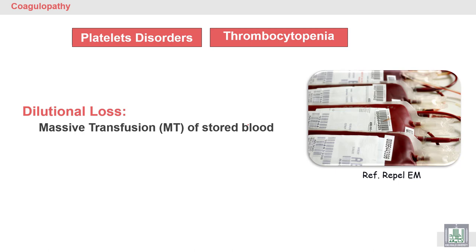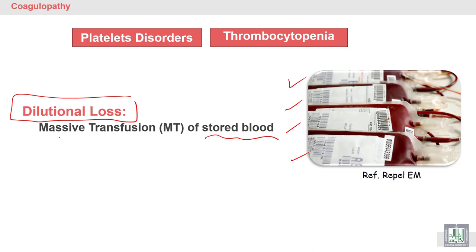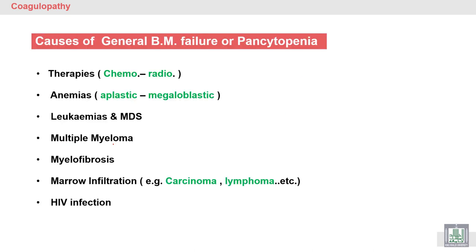Another cause of thrombocytopenia is dilutional loss. This occurs when a patient receives many packs of stored blood — stored blood has low platelets — so it occurs in massive transfusion in accidents or major surgery.